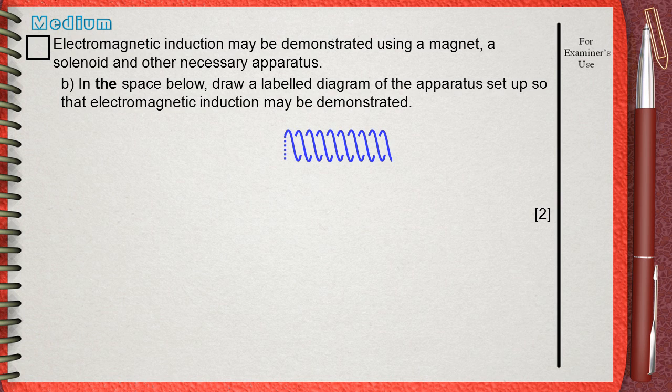This is the solenoid. We will connect the two ends of the solenoid together with a galvanometer or an ammeter, or any other device that can detect the passage of current. This is the magnet,